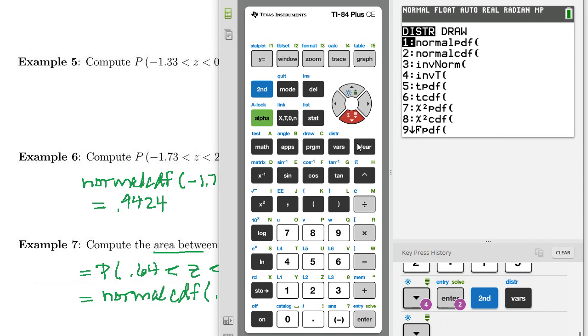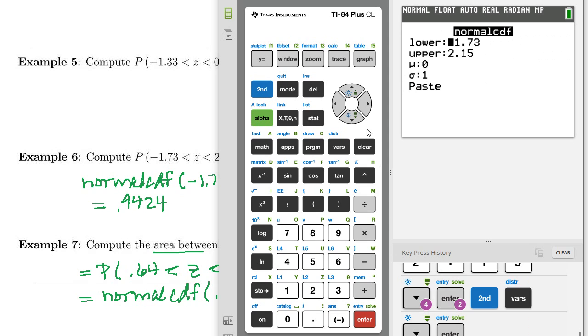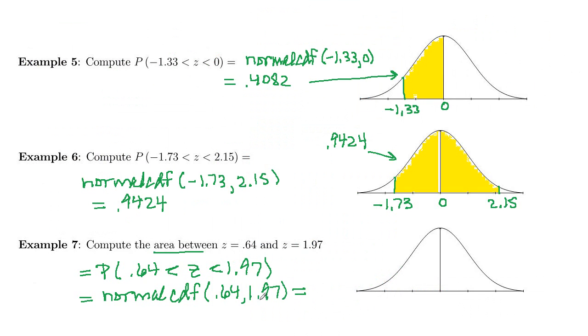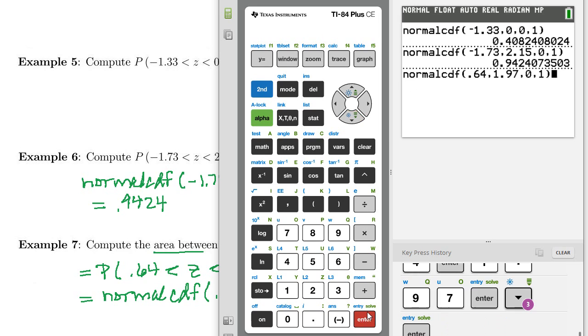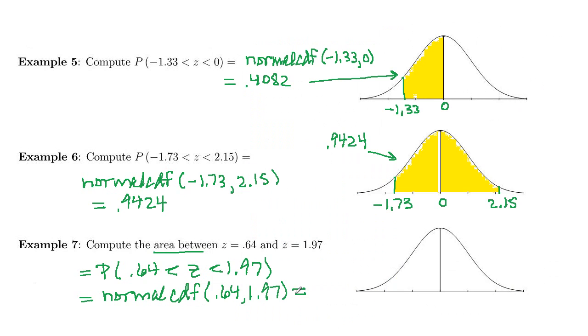So second variables, normal CDF. We've got 0.64, enter, and then 1.97. And we will arrow down and paste it and enter again. 2, 3, 6, 7.